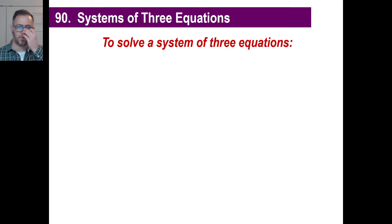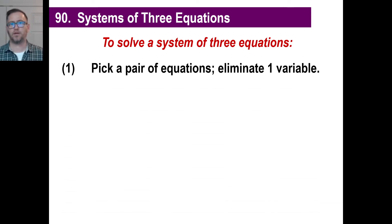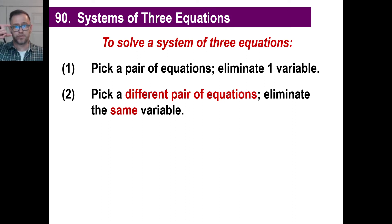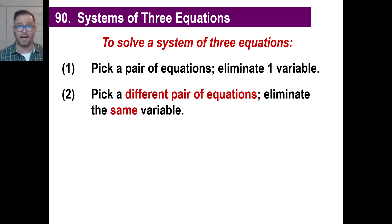Let's look at three equations. I've simplified this for you — how to solve a system of three equations. Number one: you pick a pair of equations and you eliminate one variable. You're going to have equations with x, y, and z, and you're going to eliminate one variable. Number two: you pick a different pair of equations and eliminate the same variable. If you eliminate the y in the first two equations, you take another pair and eliminate the y in the second pair. You can take equations one and two, two and three, or one and three — any one of those is fine. Pick the one that's easiest to work with. You can do x or z or whatever is easiest.